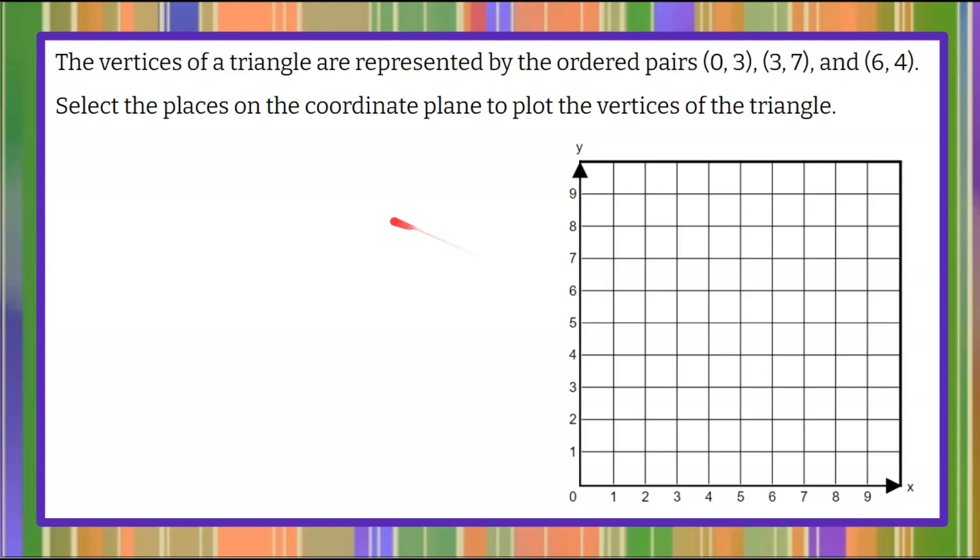Here we go. Our question today says the vertices of a triangle are represented by the ordered pairs (0, 3), (3, 7), and (6, 4). You're going to select the places on the coordinate plane to plot the vertices of the triangle. So go ahead and pause the video here, do your best work, and then come back to see mine.